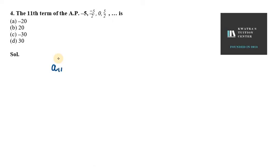That means a₁₁. Now in this case we have a as -5, d as -5 over 2.